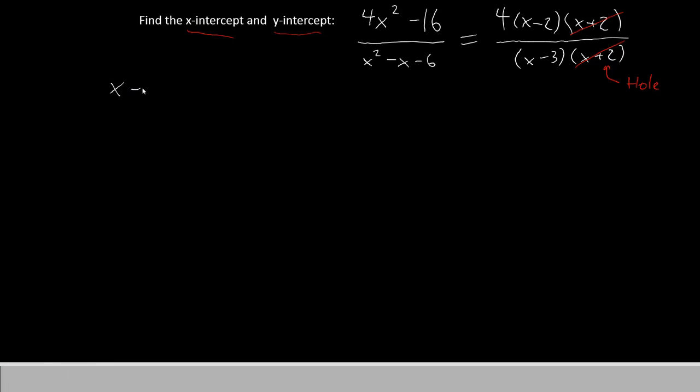So for the x-intercept, the first thing we want to do is set the numerator equal to 0. The numerator that we are going to use is the simplified one here with the hole canceled out, 4 times x minus 2. We'll set that equal to 0.